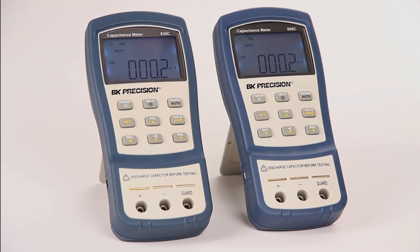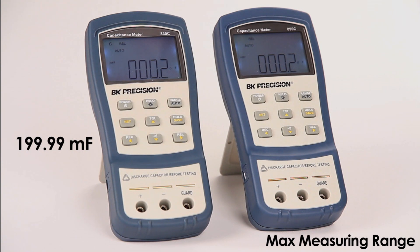Here are the models 830C and 890C. Both are dual display handheld capacitance meters. The main difference between the two meters is their max measuring range, which is 199.99 mF for the 830C and 50 mF for the 890C.